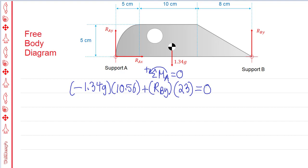Equals 0. Solving this equation gives you R_BY is equal to 6.03 newtons.